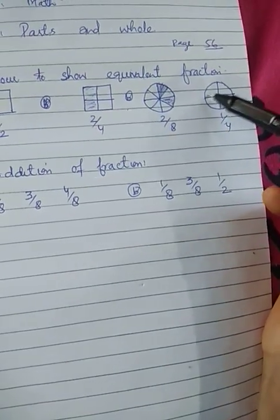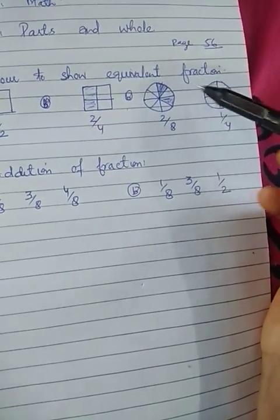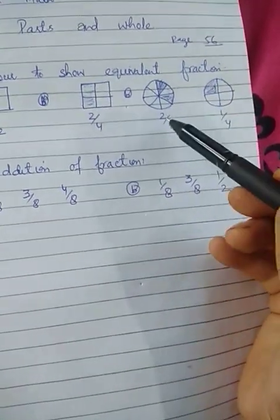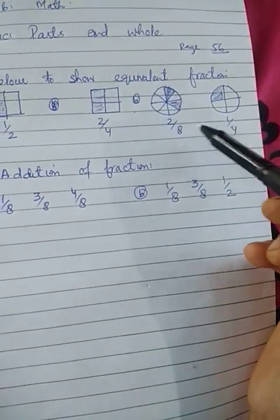This is called 1 by 4. When you combine, this part is colored and that part is colored, making 1 by 4. So 2 by 8 and 1 by 4 are equivalent fractions.